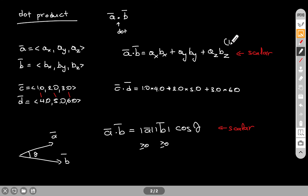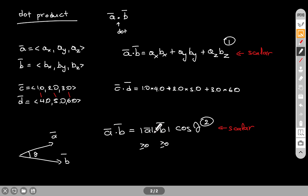Let's call the component formula expression one and the magnitude-angle formula expression two. How will you know which one to use? If from the problem you have the components — meaning if you have x, y, z for A and B — then you're going to use equation one. On the other hand, if from the problem you have the magnitude and the directions, then you're going to use equation two, as that's going to be the easier way to go.